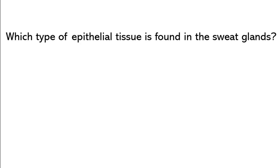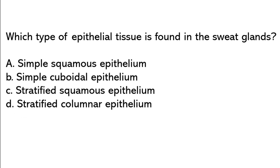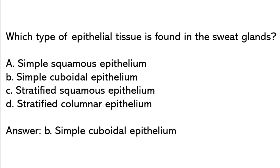Which type of epithelial tissue is found in the sweat glands? Simple squamous, simple cuboidal, stratified squamous, stratified columnar. So the correct answer is option B: Simple cuboidal epithelium.